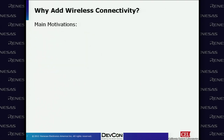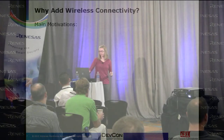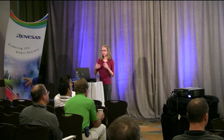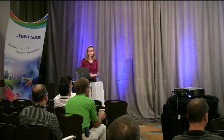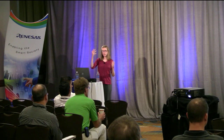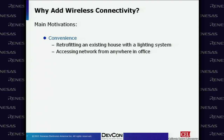Why do you want to add wireless connectivity to your product? The first motivation is convenience. For example, installing a lighting system — you wouldn't want to rip out every wall to run wires. It's much easier and more cost-effective to use a wireless solution. Another example is accessing your network from anywhere in your office. Here at DevCon, all of us have mobile devices, and we wouldn't achieve the same connectivity without wireless.